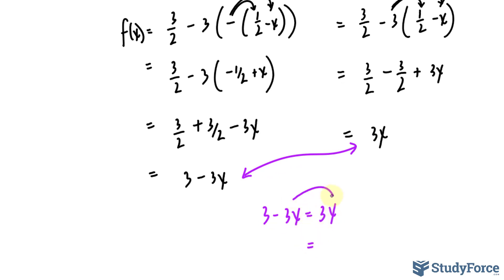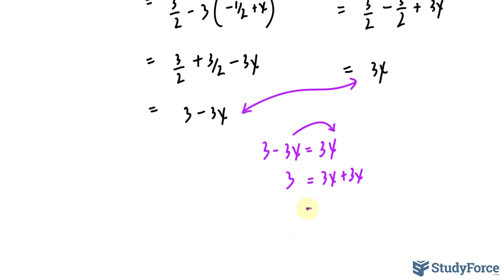And if we set them equal to each other, we'll bring that term over so that they are common. Simplify the right side, it's 6x and 3 on the left, divide both sides by 6, and we get 1 over 2 is equal to x.